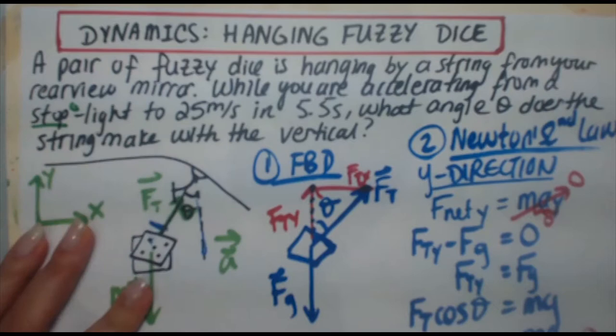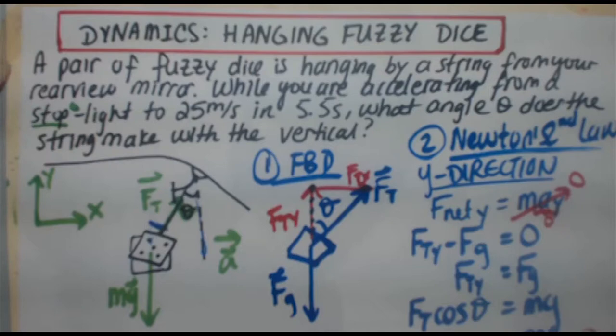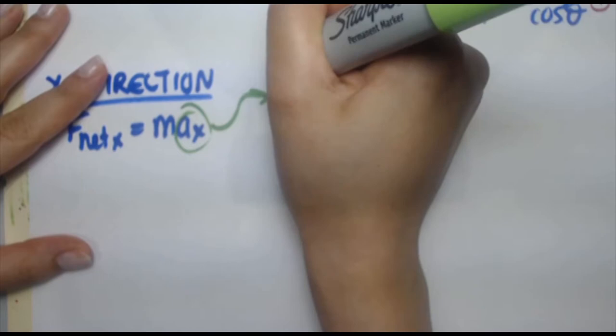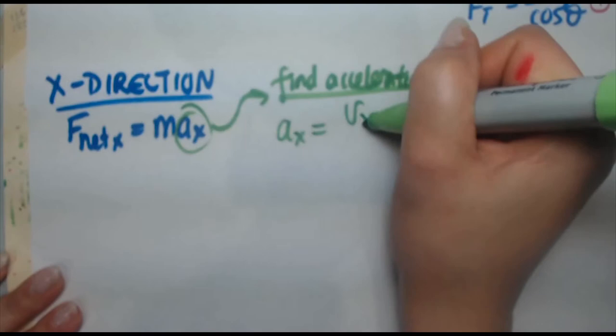Although we weren't told in the question how much you're accelerating by, you are given information to determine the acceleration. You are accelerating from a stoplight. Stop implies you start at zero meters per second to 25 meters per second. V naught, V final, time interval, that's it. That's all you need to find acceleration. Change in velocity over change in time.